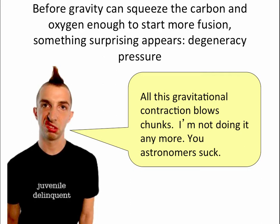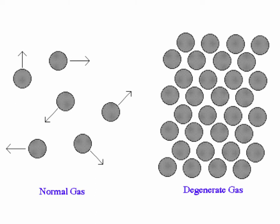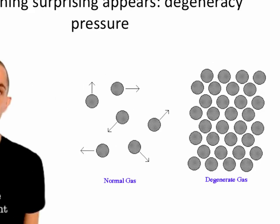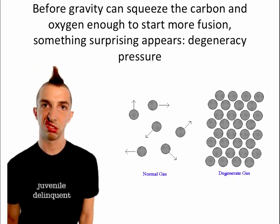So here's our typical degenerate explaining to us why it doesn't want to be squeezed anymore. It's done enough work. And basically what you end up with, whereas in a normal gas atoms are flying all around, in a degenerate state they're packed so tight together that while it's still a gas you can't press them any closer. This will stop gravitational contraction.